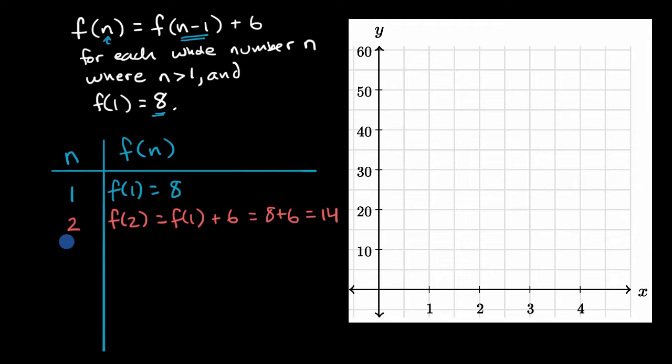Let's keep going. So now we want to figure out what f of three is going to be equal to. Well, same idea. It's going to be equal to f of three minus one, or f of two plus six. We keep adding six every time. So f of two, we just figured it out, is 14. This is strangely fun. 14 plus six, that is equal to 20.